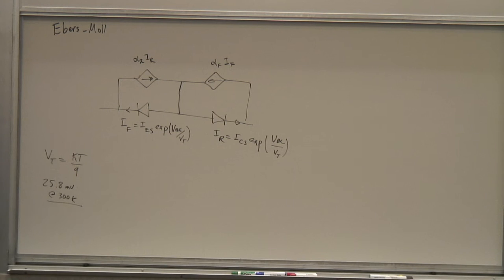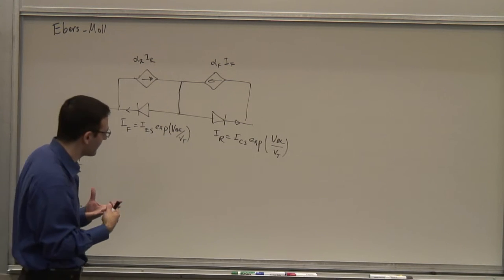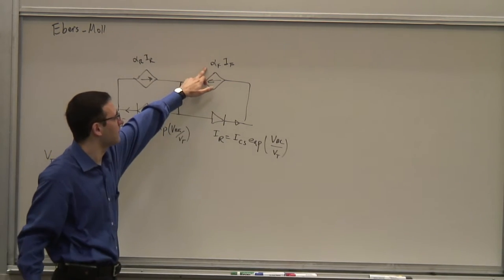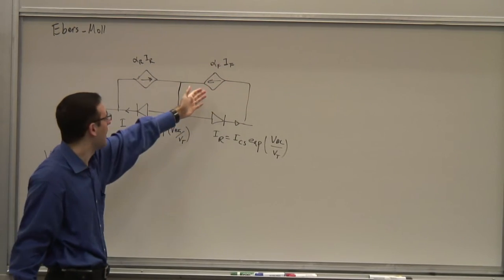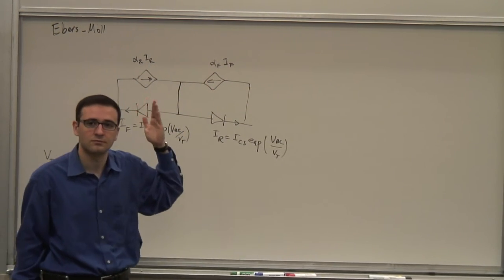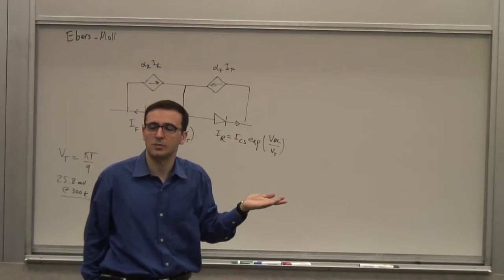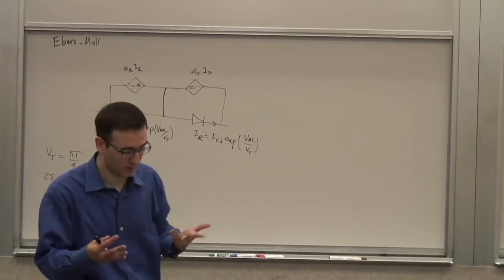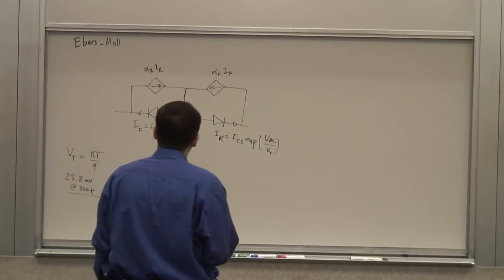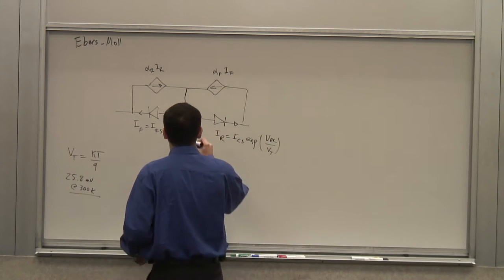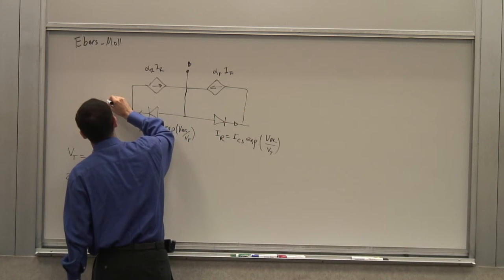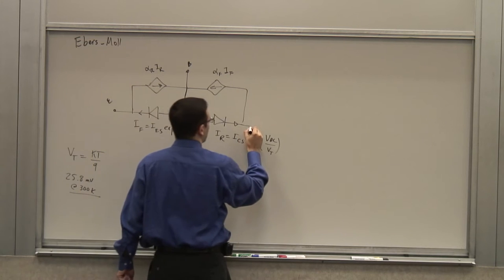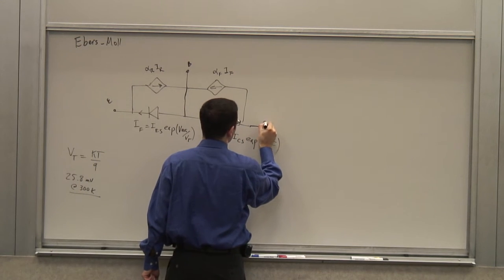In a properly designed transistor, because of how you handle the doping level, your alpha_F is close to 1, and your alpha_R is generally smaller than 1, sometimes substantially. So that was the basic model — the base, the emitter, and the collector, for NPN. For PNP, the polarities switch.